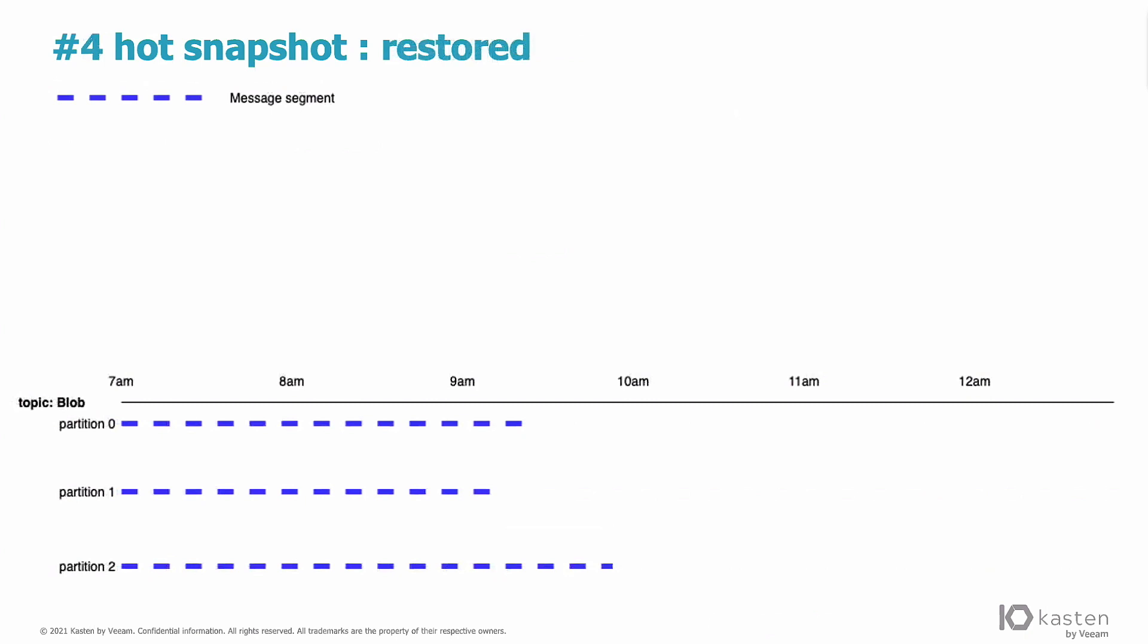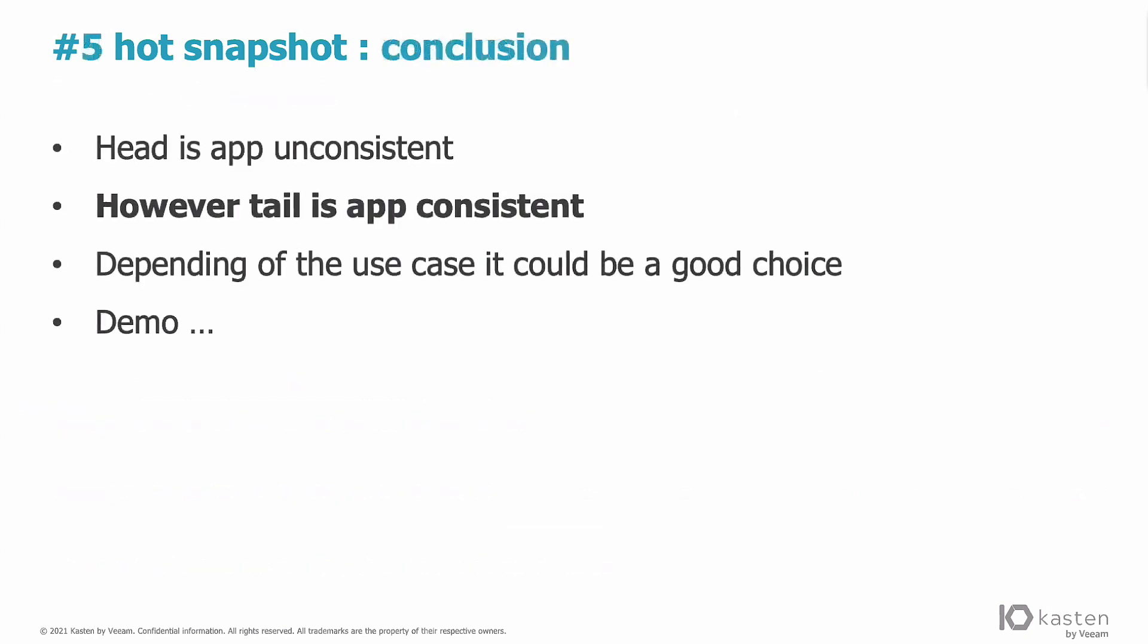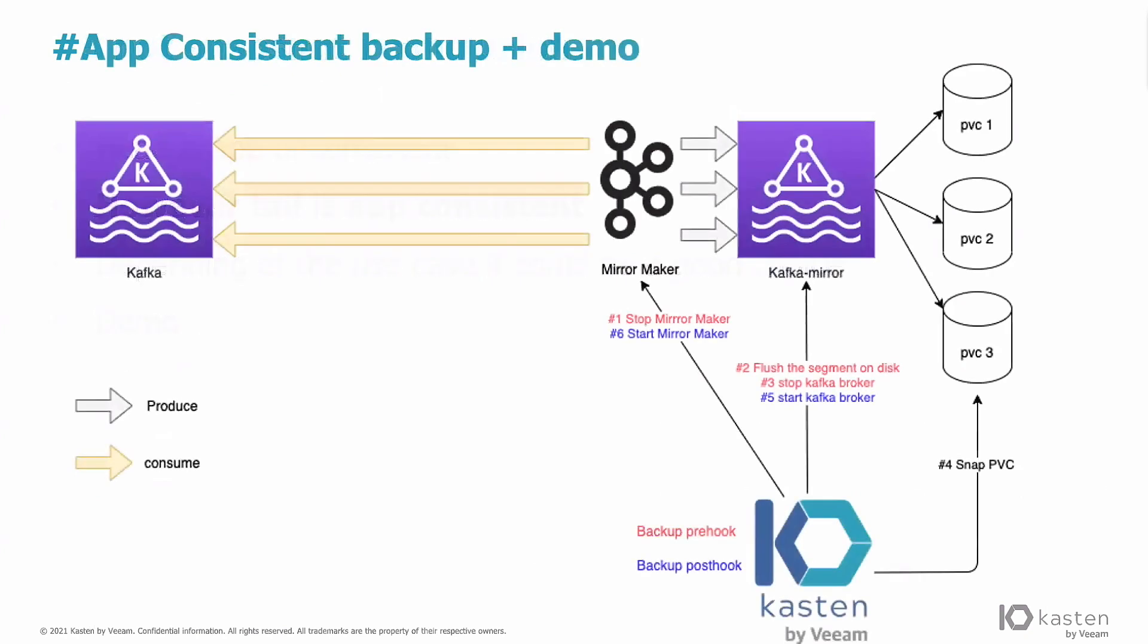And when I restore, when I try to restore my snapshot, what happens? I find myself in this situation. And that may not be application consistent, but it could be acceptable depending on the application. So the head of the topic may not be consistent, but the tail of the topic may be consistent. Depending on the use case, it could be a good choice. So let's have a look very quickly at how we implement this quick backup.